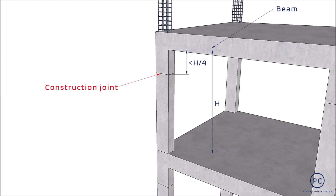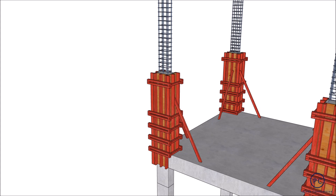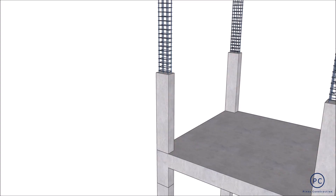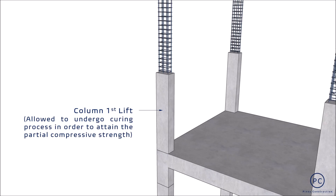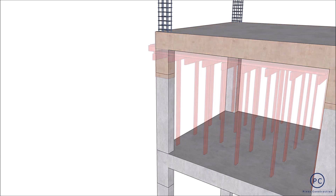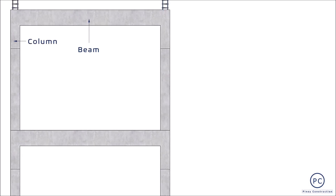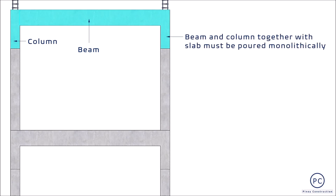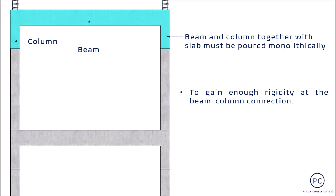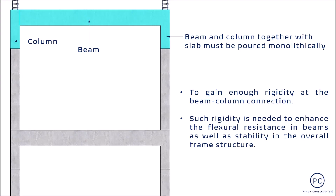Inuputol din ang buhos ng column within the last H over 4 ng clear height, just below the underside of beams. Ibig sabihin, popormahan at bubuhusan ang column mula sa ibabaw ng slab hanggang sa nabanggit na location. Karaniwan sa construction site, ang bahaging ito ng column ay tinatawag na column first lift. Ito ay inaalaw na mag-undergo ng setting, hardening, at curing process upang ma-attain ang partial compressive strength. Once achieved, ito ay magsisilbing added support sa kasunod na popormahang floor system na eventually ay bubuhusan din. Ang natitirang bahagi ng column na less than H over 4 ay popormahan at bubuhusan kasabay ng floor system, upang magkaroon ng enough rigidity ang connection sa pagitan ng column at beam. Ang rigidity na ito ay nagbibigay ng flexural resistance sa beam at stability sa overall frame structure.